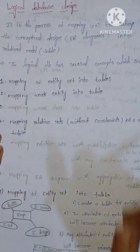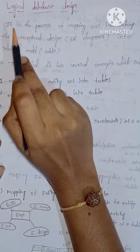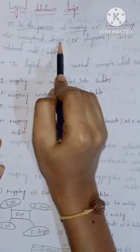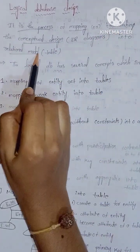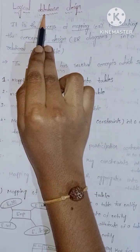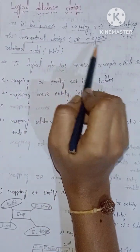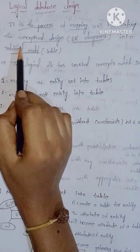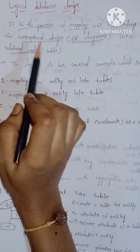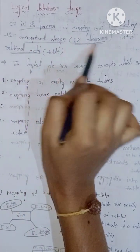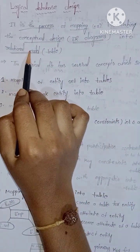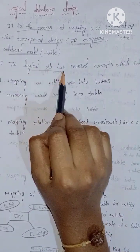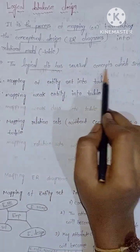The next topic is Logical Database Design. It is the process of mapping or translating the conceptual design ER Diagrams into the Relational Model. ER Diagrams are converted or translated into the Relational Model, where a relation is nothing but a table. Logical Database Design has several concepts which includes mapping of entity sets into tables.